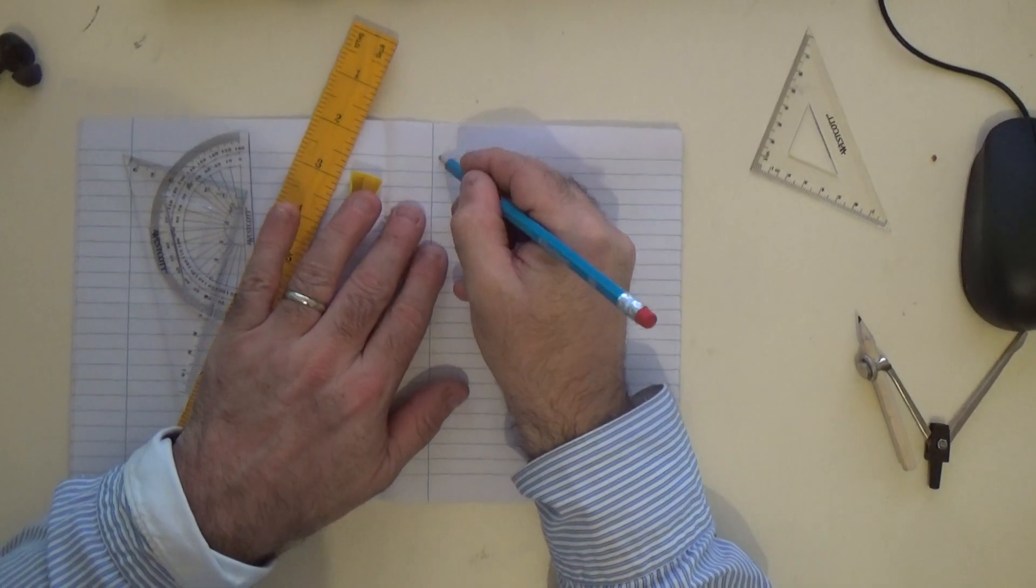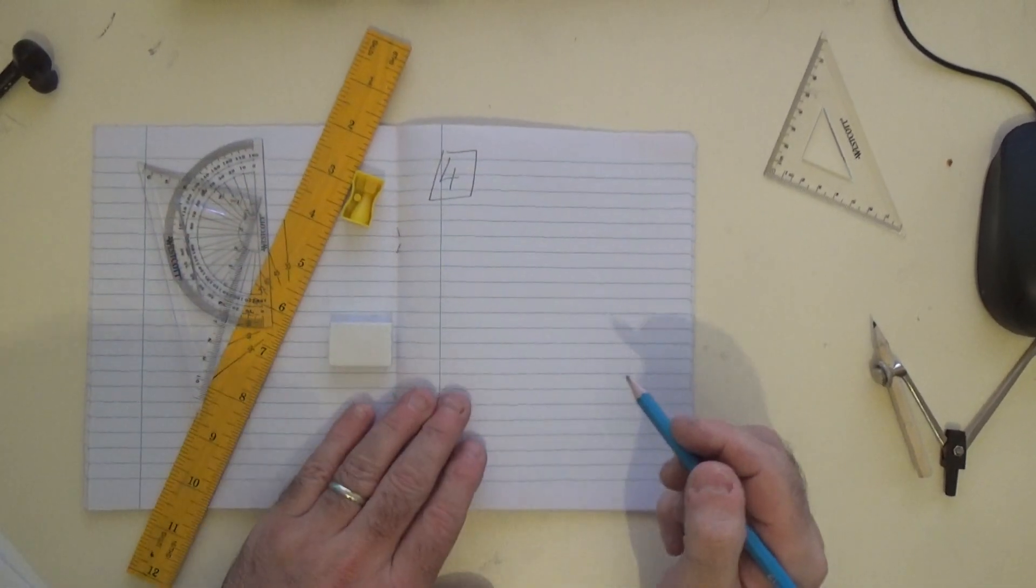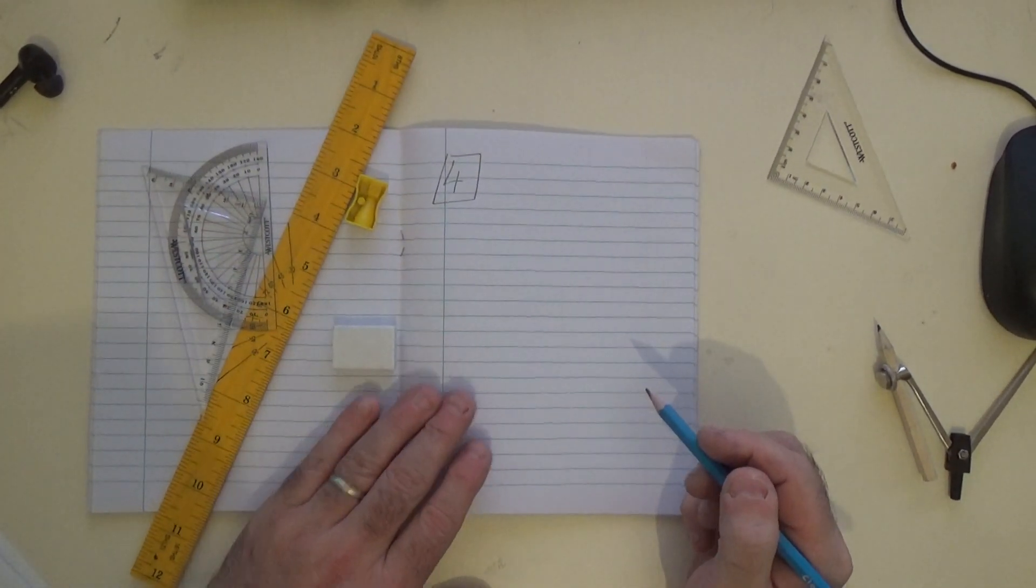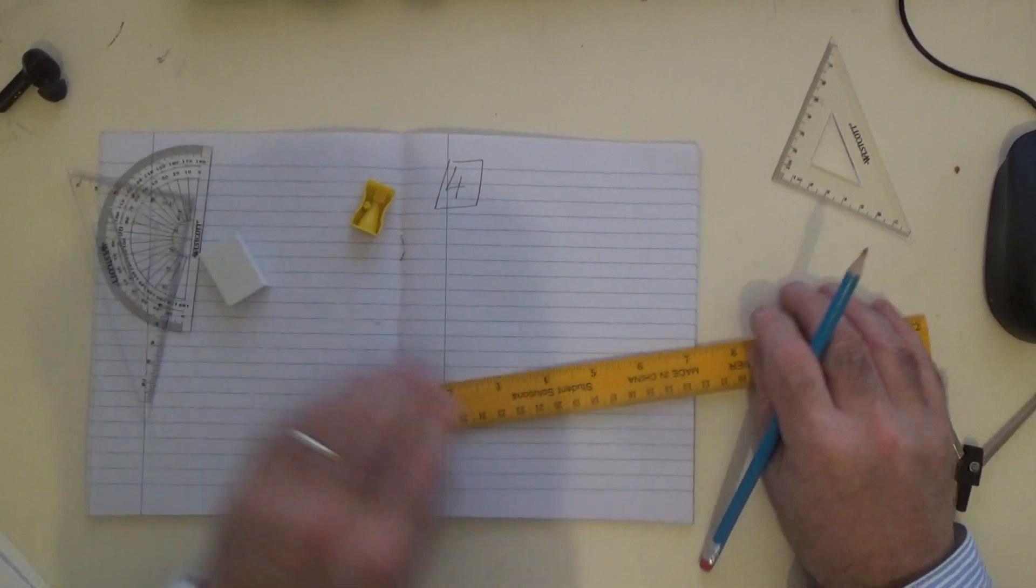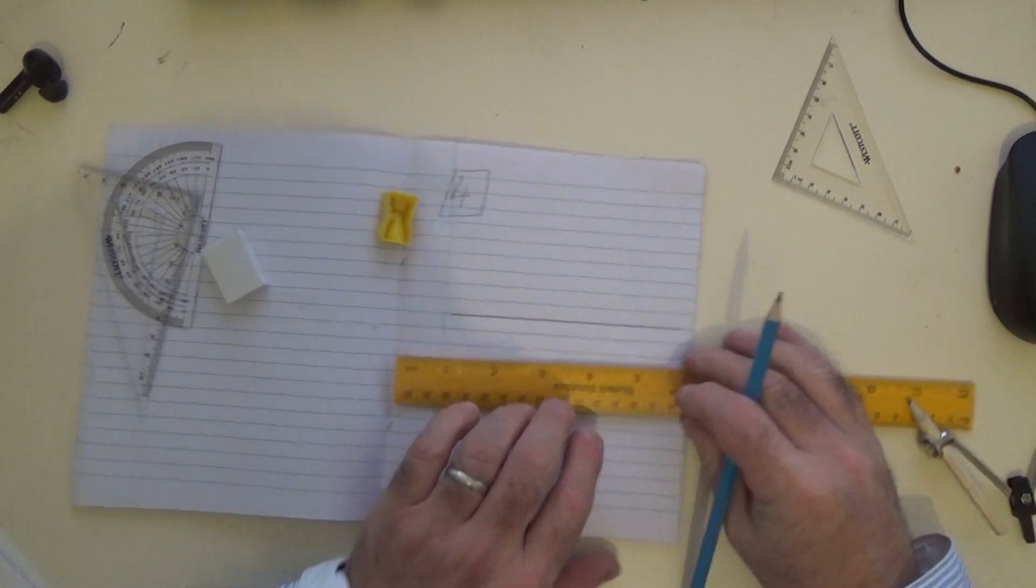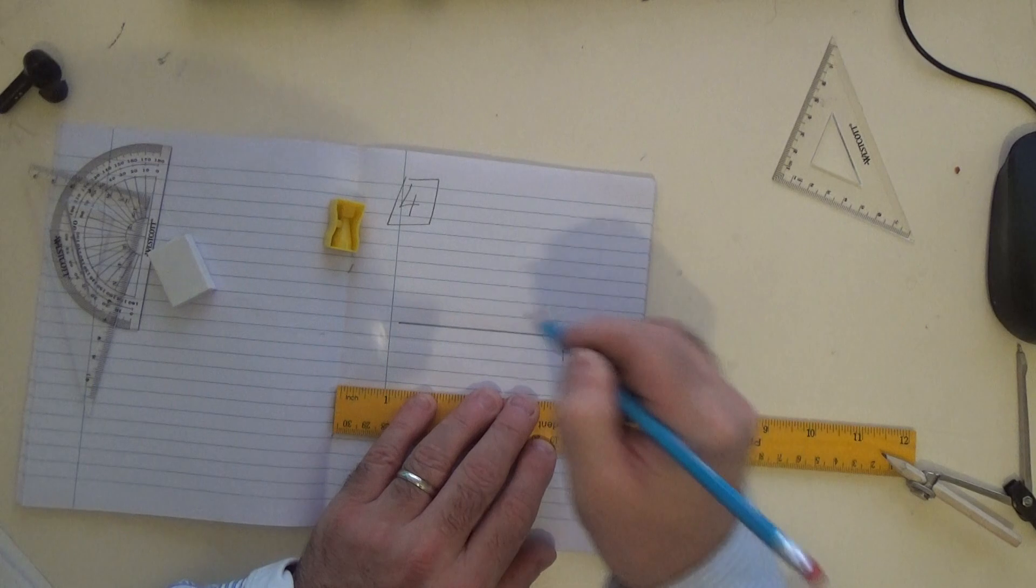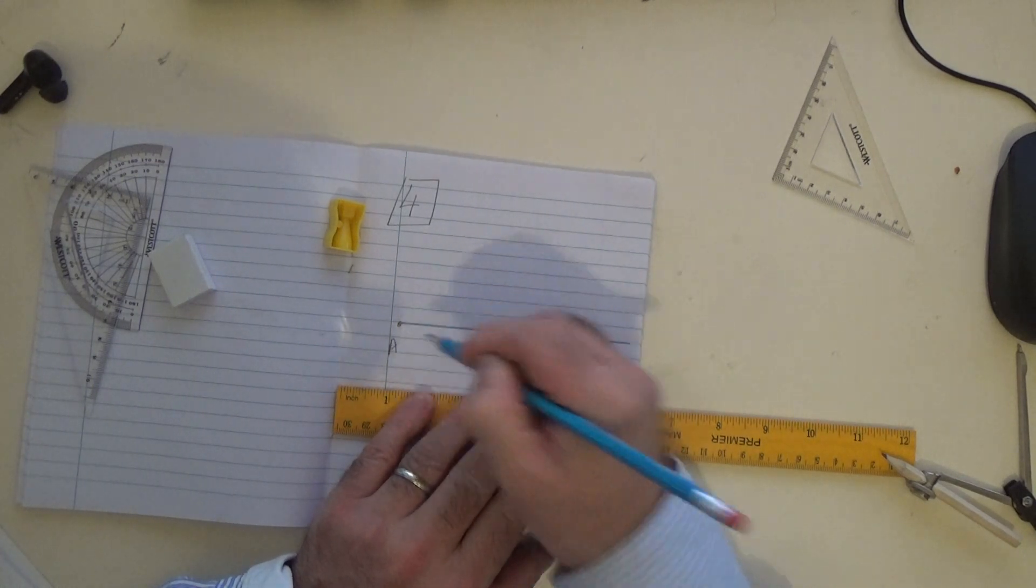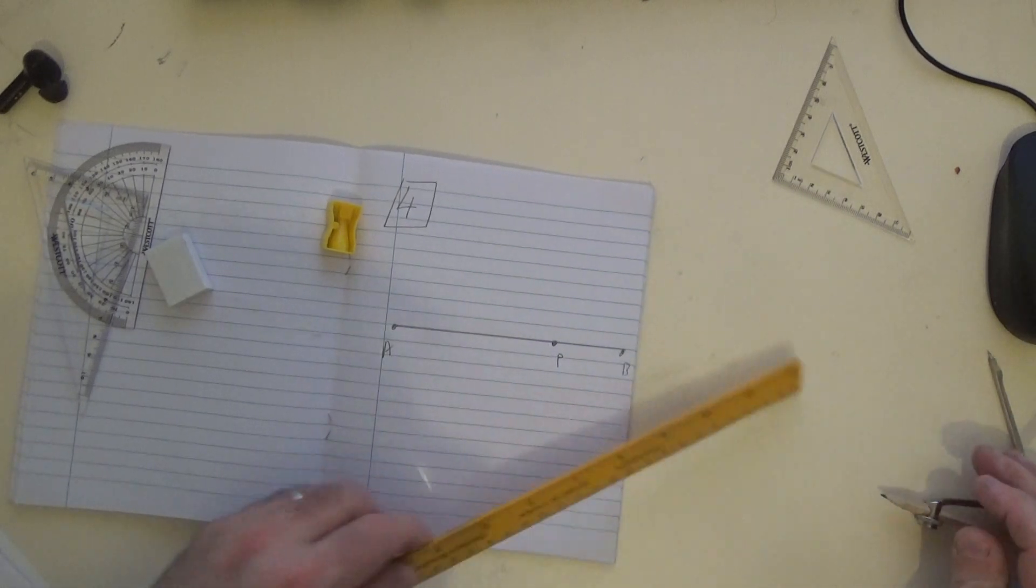Okay, we're moving on to Construction 4, which is on your course for both ordinary level and higher level at junior cert. The construction is: you take a line segment, you take a point on the line segment we call it P, typically call the line segment from A to B, and we're going to construct something at 90 degrees to this.